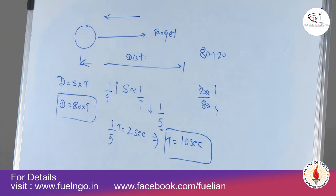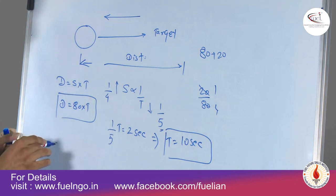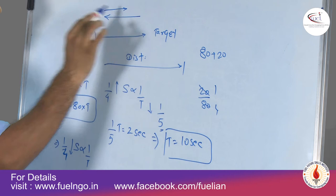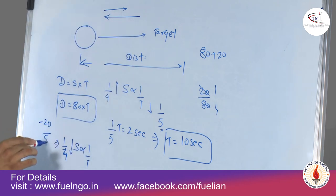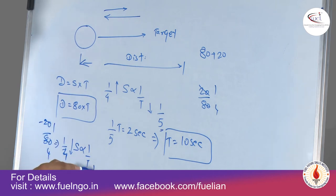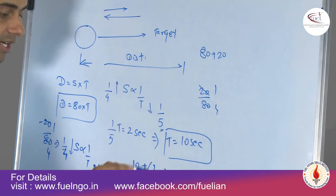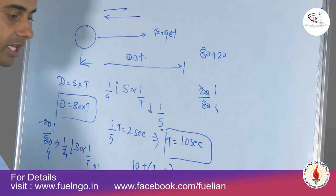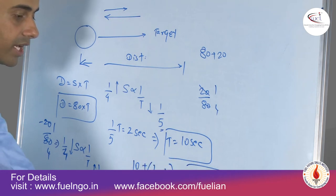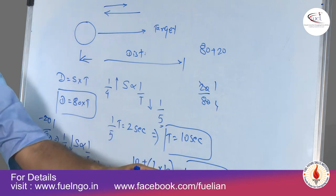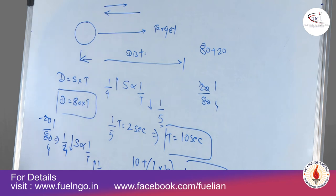Now, if the arrow is shot against the wind, speed reduces by 20 on a base of 80, which is a reduction of 1/4. Since speed decreases by 1/4, time increases by 1/3. The original time is 10 seconds, so time increases by 1/3 of 10, which is 3.33 seconds. The total time to hit the target shot against the wind is approximately 13.33 seconds.